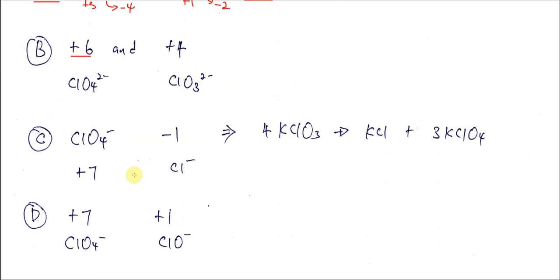For option C, because positive 7 is given, we know that the anion must be ClO4 negative. This is negative 8. Overall charge is negative, so this one must be positive 7.